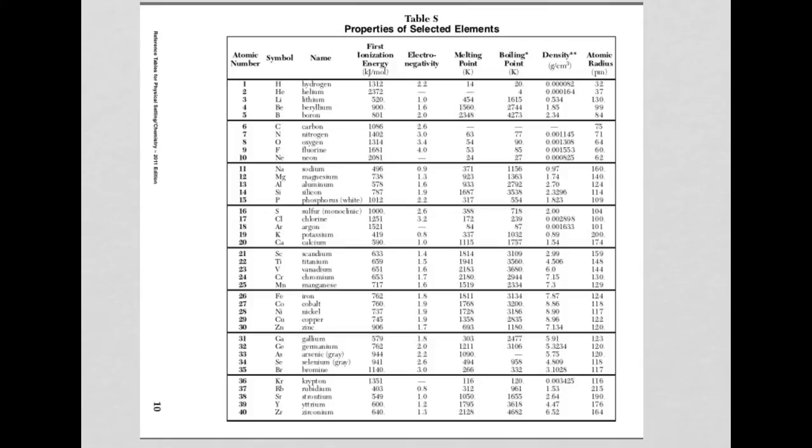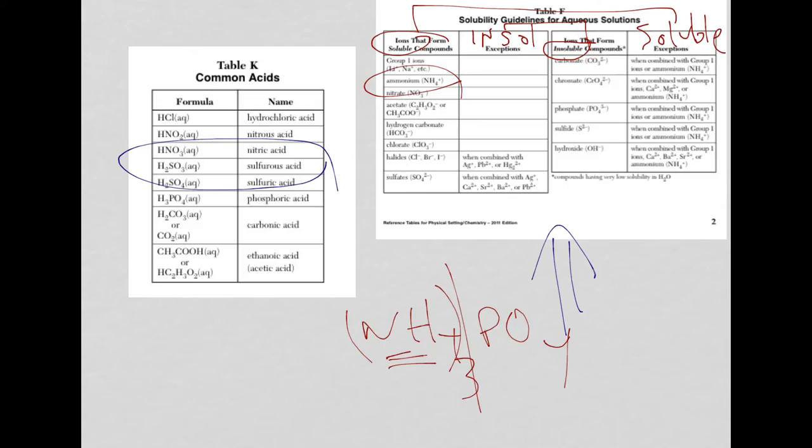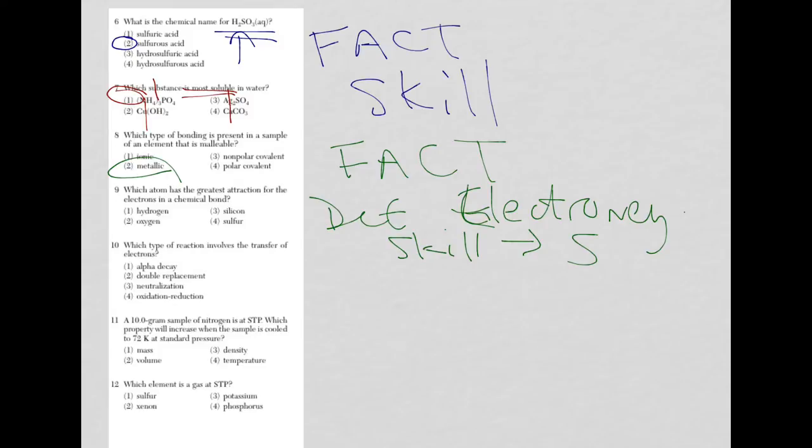We're dealing with hydrogen and electronegativity of 2.2, oxygen 3.4, silicon 1.9, and sulfur 2.6. And you were asked, which one is the highest? There it is, oxygen, which is 3.4, because it's the greatest attraction, means the highest value.